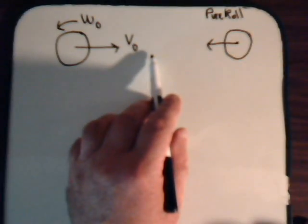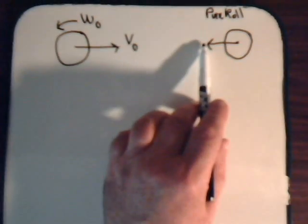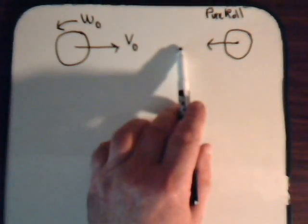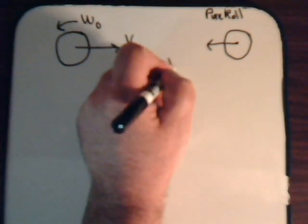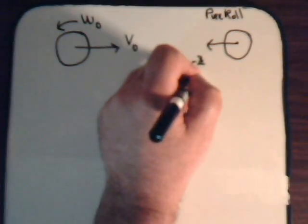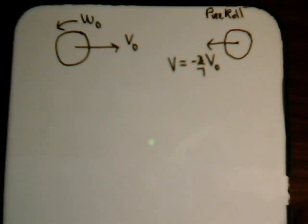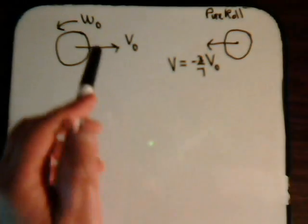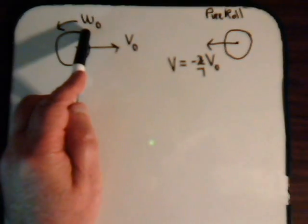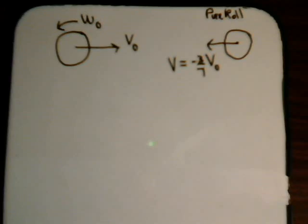When it goes into pure roll in the reverse direction, the velocity at that time will be minus three-sevenths of its initial velocity. So to have this kind of situation, what would have to be the relationship between Omega-naught and V-naught? That's what we want to determine in this video.